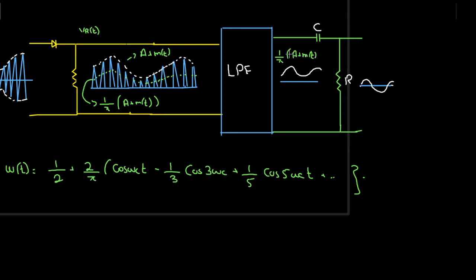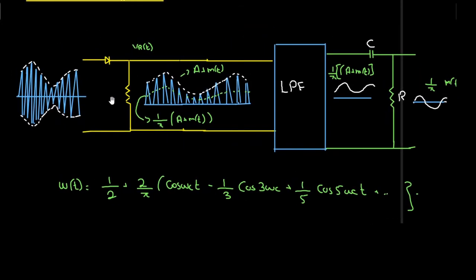When (1/π)[a + m(t)] is passed to the DC blocking capacitor, the DC component 'a' is removed. As a result we have only the message signal (1/π)·m(t). In this way we can recover the message signal from the amplitude modulated signal using the rectifier.